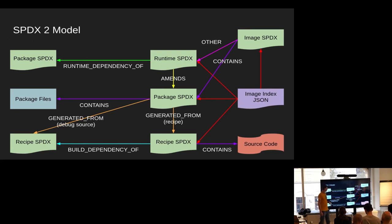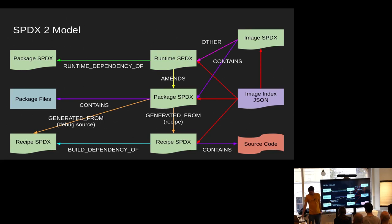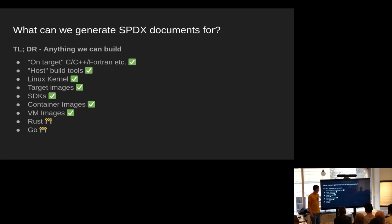The packages obviously contain files. We also have to do a weird thing with runtime data, which I'll explain. We can optionally add all the source code that got downloaded into that recipe SPDX — it's off by default because it's massive and increases the size of your SBOMs by an order of magnitude. We also have an SPDX document that describes the image. It's pretty comprehensive; we can describe a lot of stuff with SPDX2, and basically anything that we can build, we can generate meaningful SPDX output for.